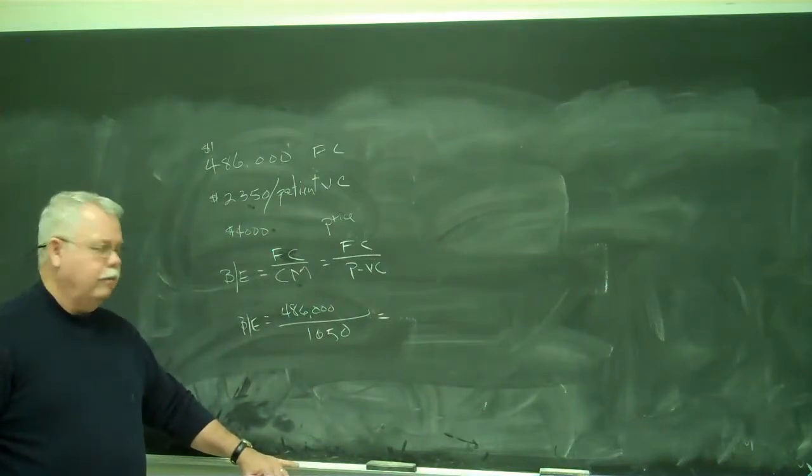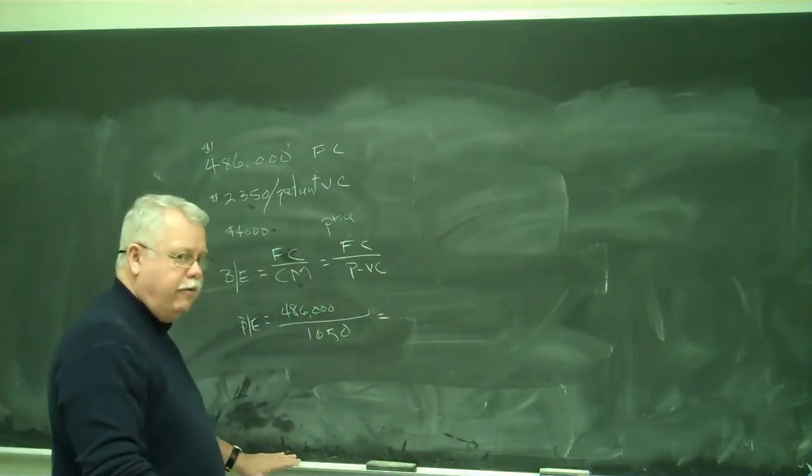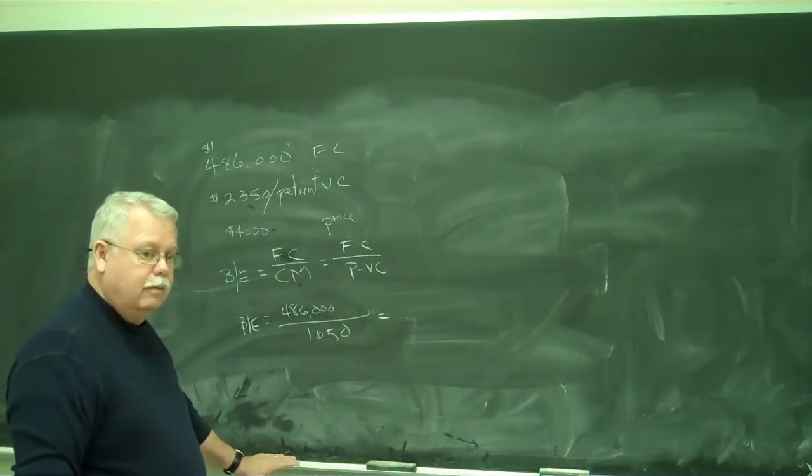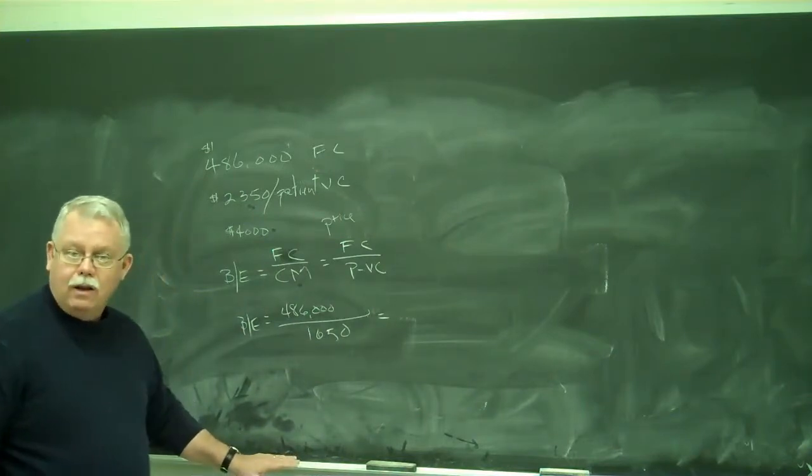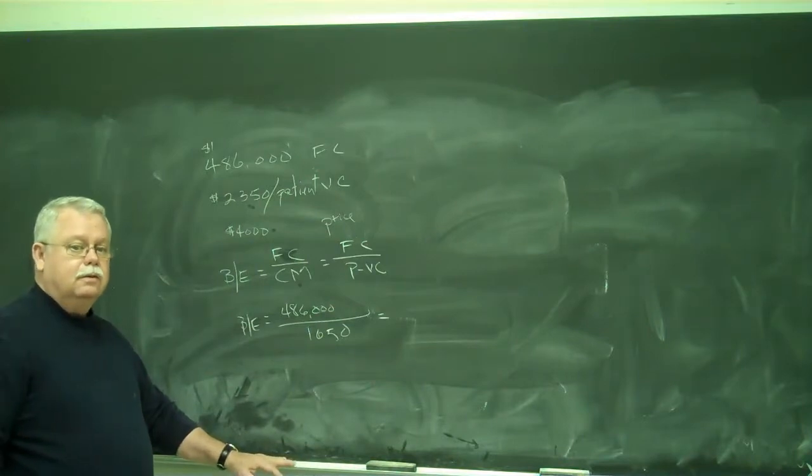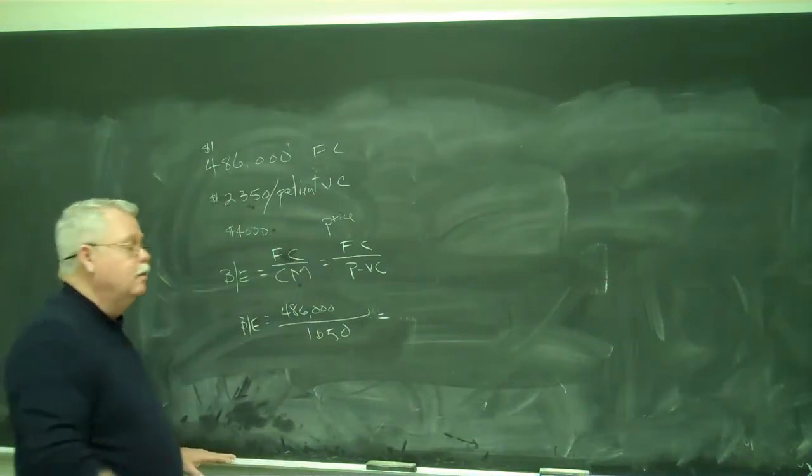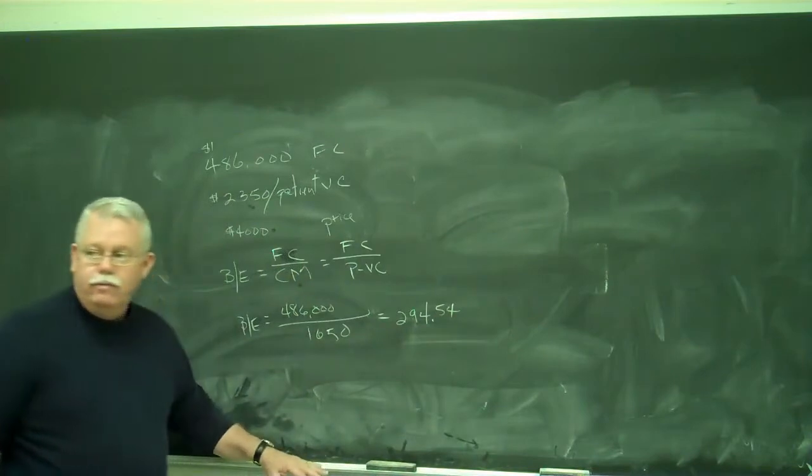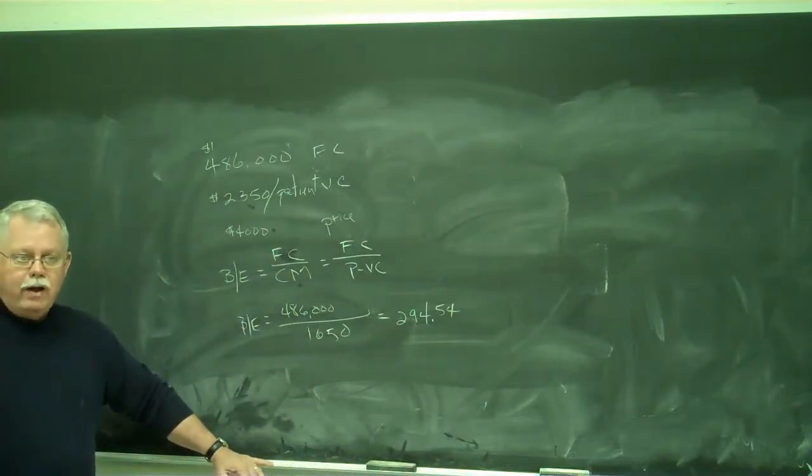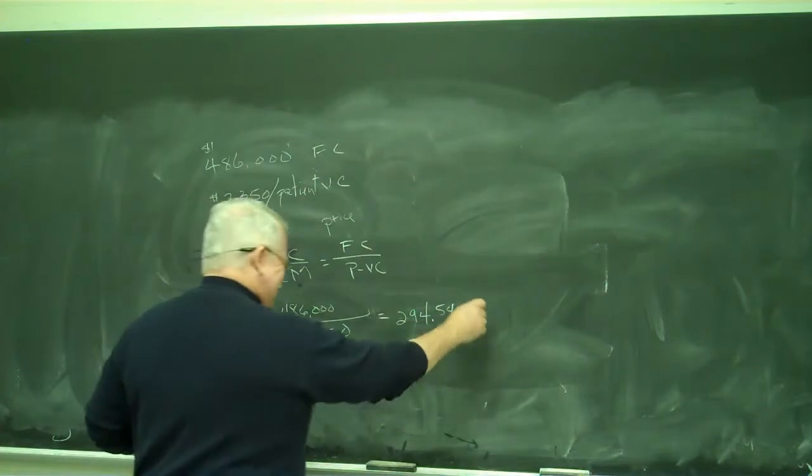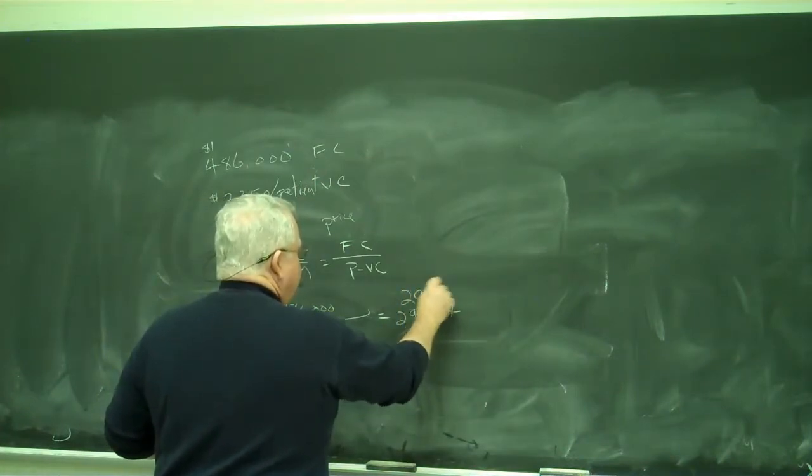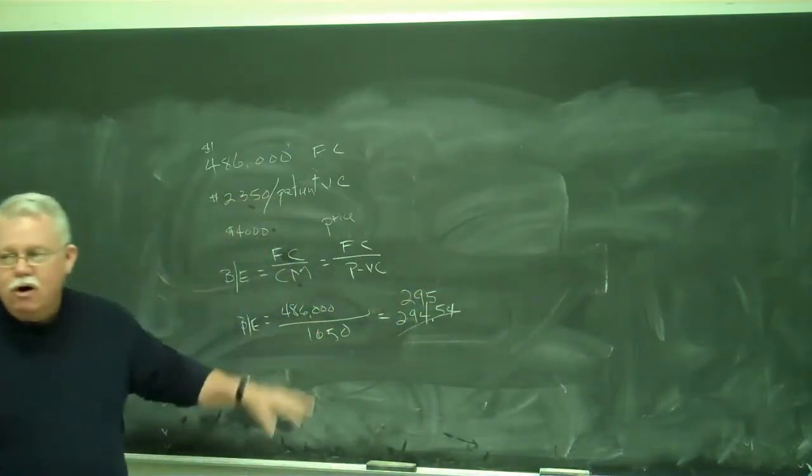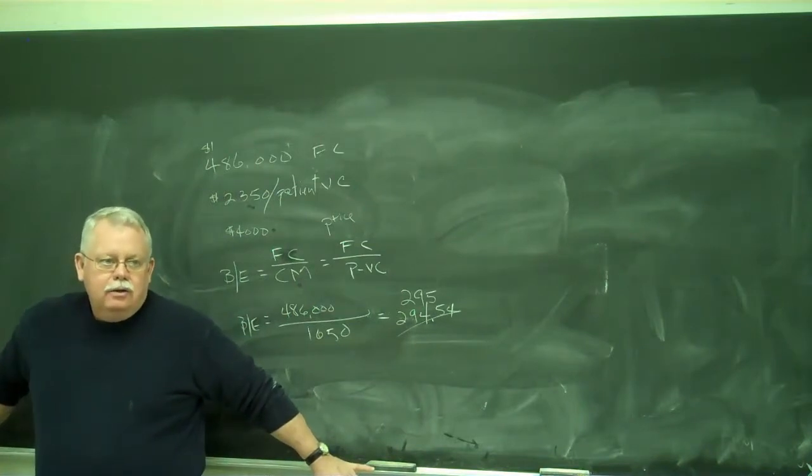How many is that? 295. 295 point something or 294 point something? 294.54. Okay. 294.54. And we know you can't just have a half a patient, so we round it up. 295. That sounds good. We need 295 patients a year just to cover our costs. There's no profit embedded in that yet.